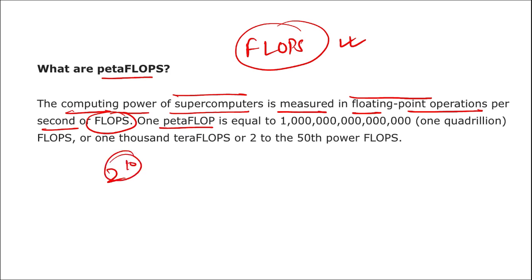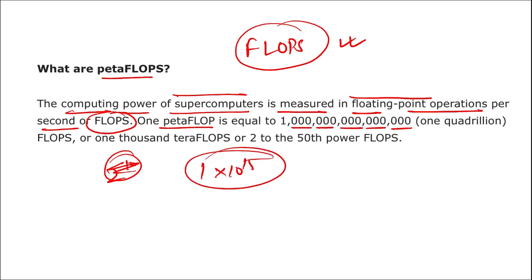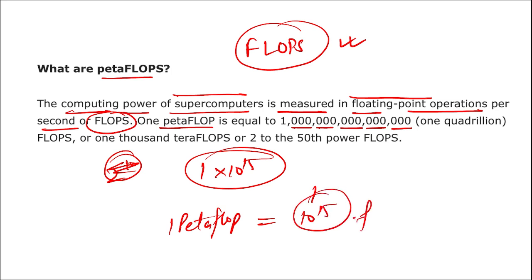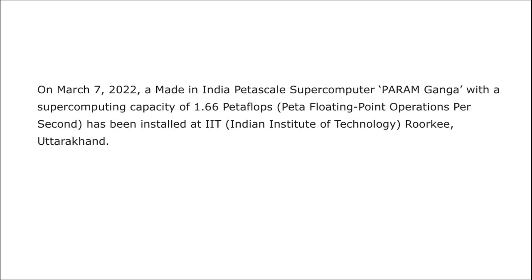One petaflop is equal to 2 to the power of 50, which means 1 × 10 to the power of 15 flops. So 1 petaflop equals 10^15 flops. Flops stands for Floating Point Operations Per Second — this is how the computing power of a supercomputer is measured.